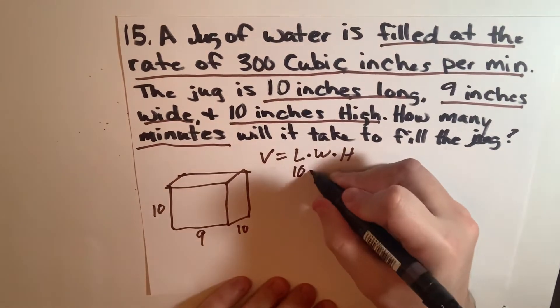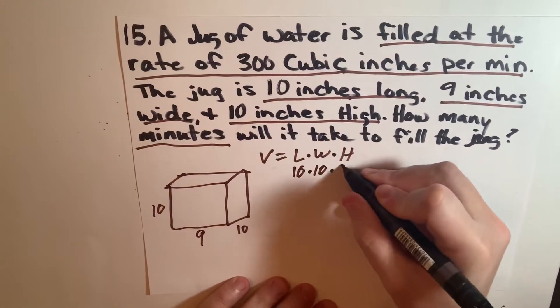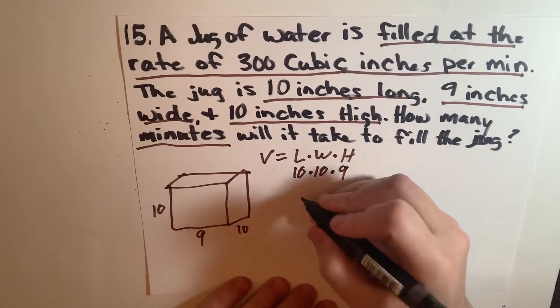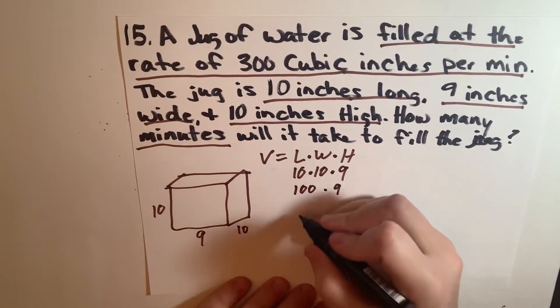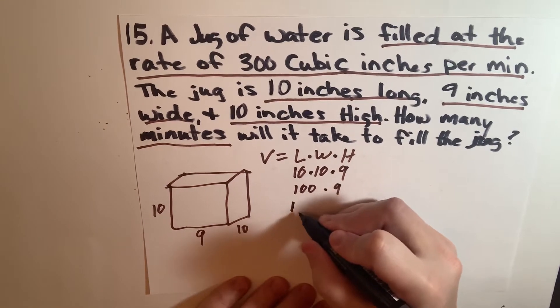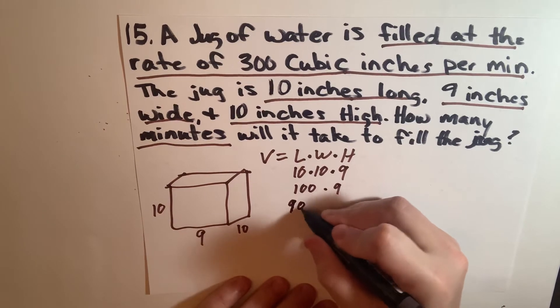So it's 10 times 10 times 9. 10 times 10 is 100, so it's 100 times 9. 100 times 9 is 900.